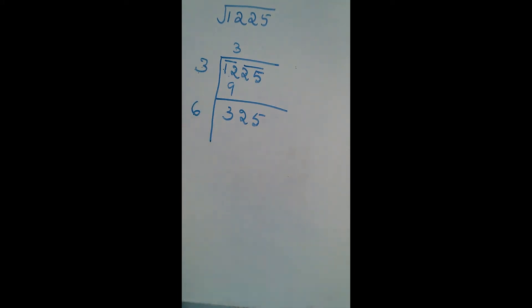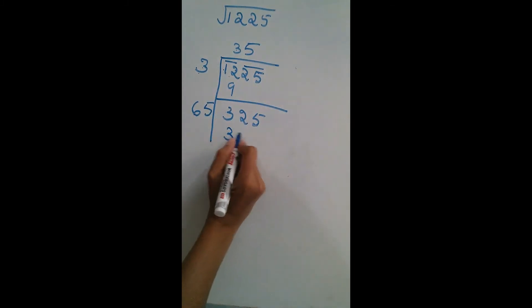Now we have to add 3 plus 3 is 6. Now we have to write the number such that it should be either less or equal to 325. If we write 61, means here also 1 we should write. 61 into 1 is 61, but it's very less. Now 62 I can try. 62 into 2 is 124. Same way we try 63 times 3, 189, it's less. I can write here 65. 65 into 5, it is 325.